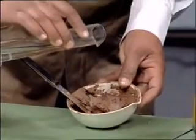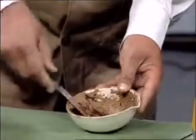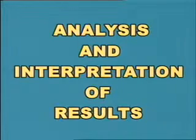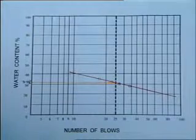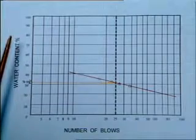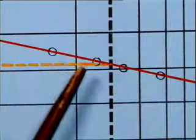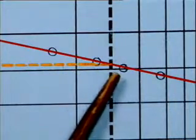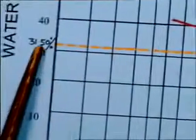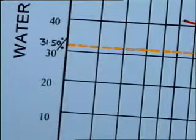Now, repeat the procedure with different water contents from dry to wetter condition of soil and record the various observations 3 to 4 times. To analyze and interpret the results for the liquid limit test, we plot a graph between number of blows and water content on a semi-log graph, making use of readings recorded during various tests. The moisture content corresponding to 25 blows from the flow curve, that is 31.50 percent, is the liquid limit of the soil.